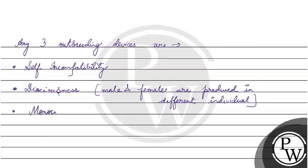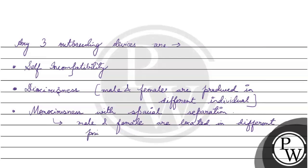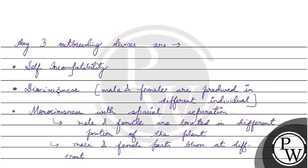Number three is monoecy with spatial separation. Monoecy means that both male and female parts are produced on the same plant. But due to spatial separation, the male and female parts are located in different positions on the plant, so self-pollination does not occur easily. Additionally, male and female parts may mature at different times of the year to prevent self-pollination.